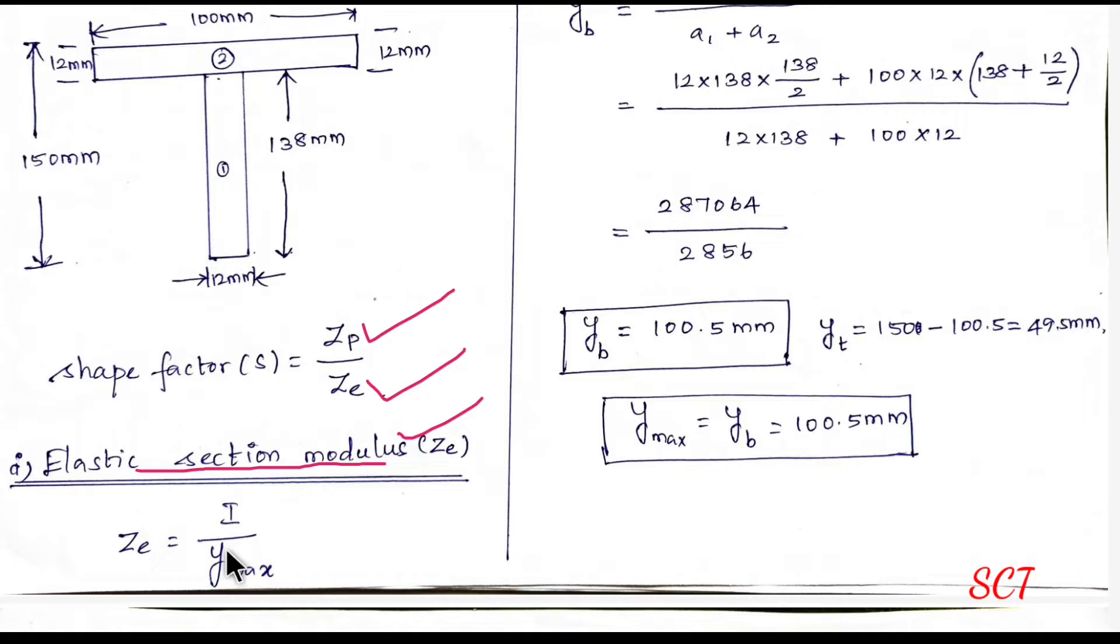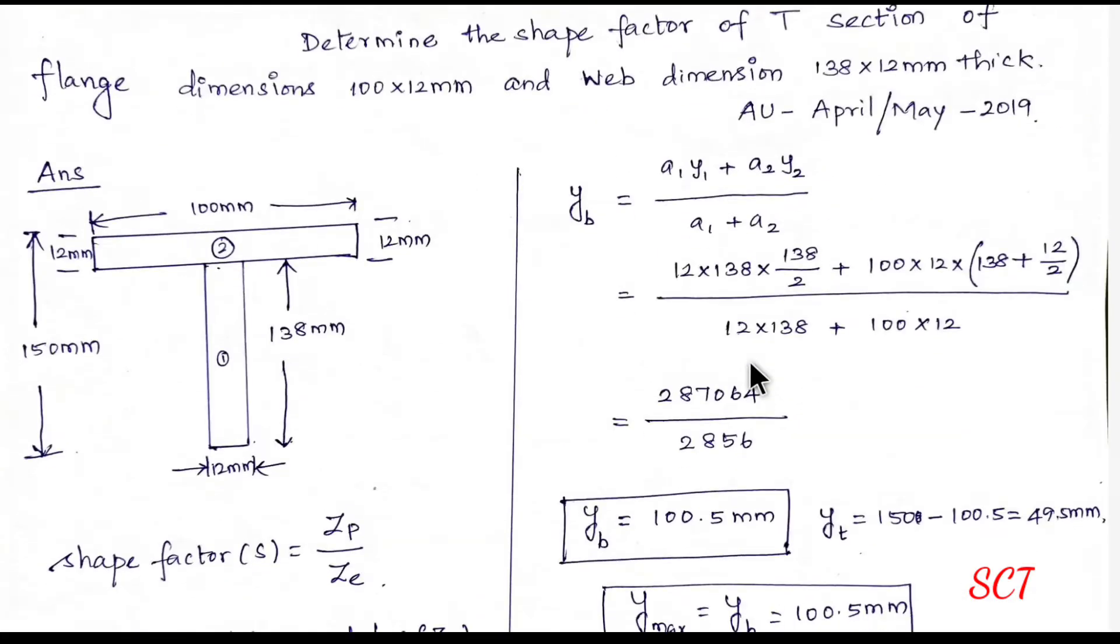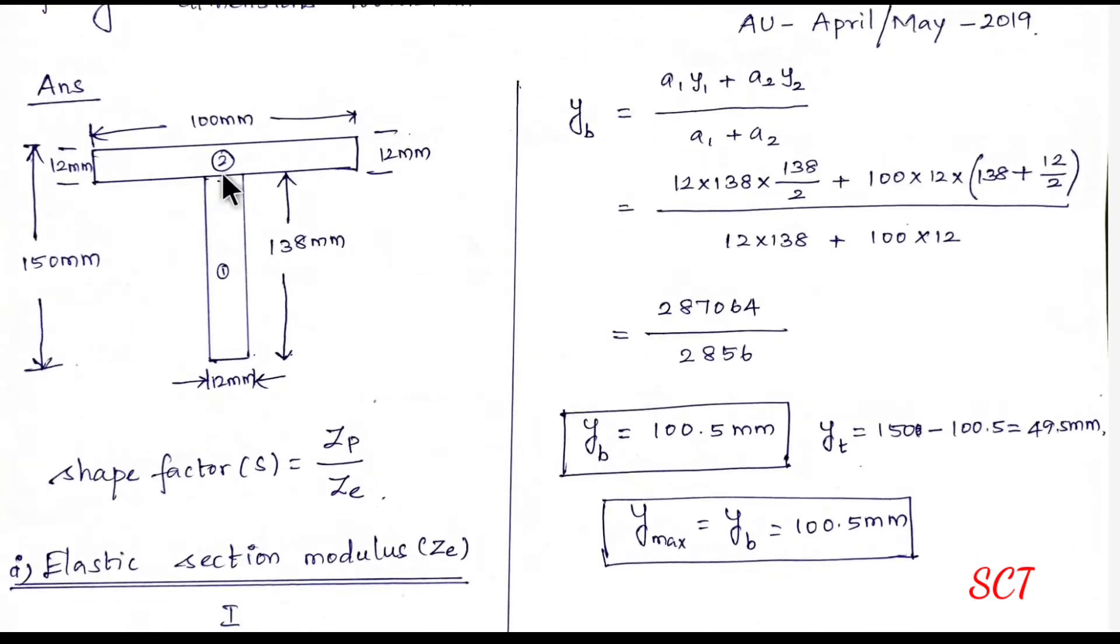So, ZE is equal to I by Y-max. I is the moment of inertia, Y is the neutral axis depth. First, Y is the y-max. What do I do? The neutral axis depth is from the bottom.